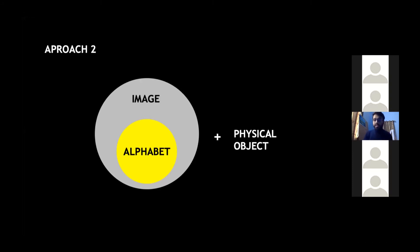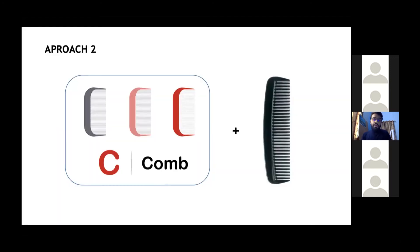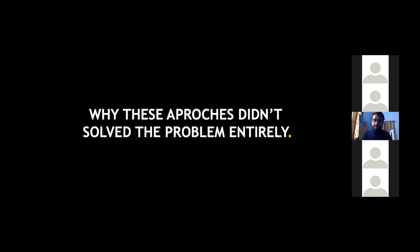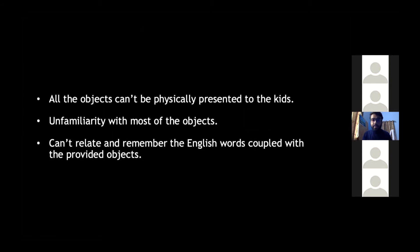The second approach extended this by presenting the teaching alongside a physical object — for example, a teacher can teach with an actual comb. Of course, this is not feasible in all cases; not all objects can be brought to class. These initial approaches were interesting but didn't solve the problem entirely — because not everything can be brought to class, and children were unfamiliar with objects like apes or flamingos that they hadn't seen before.